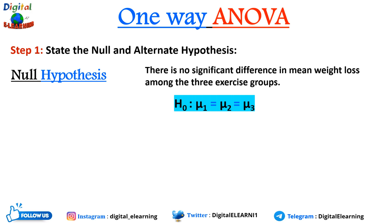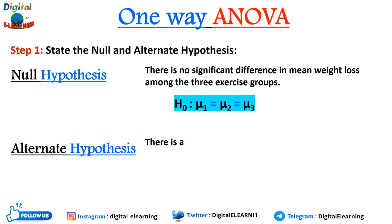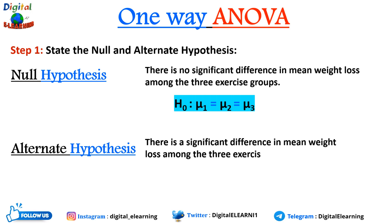Our alternate hypothesis states there is a significant difference in the mean weight loss among the three exercise groups. We write it as H1: μ1 ≠ μ2 ≠ μ3. That is our null and alternate hypothesis.